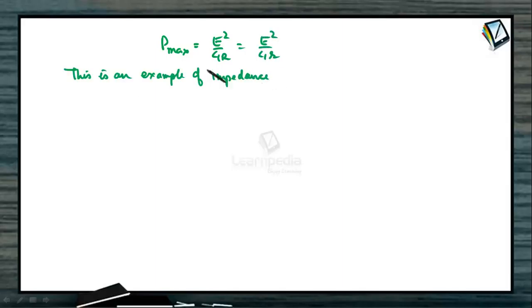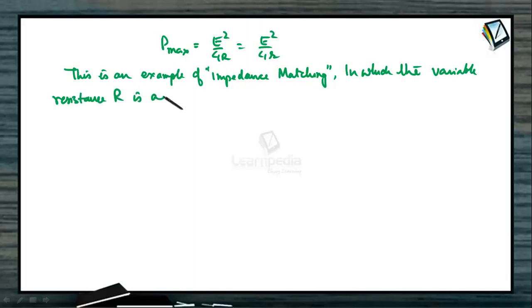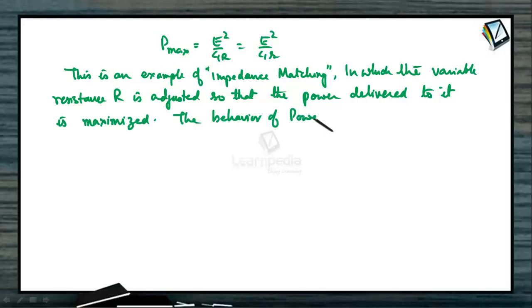This is an example of impedance matching where external resistance is equal to the internal resistance, in which the variable resistance capital R is adjusted so that the power delivered to it is maximized. The behavior of power P as a function of resistance R is as shown.